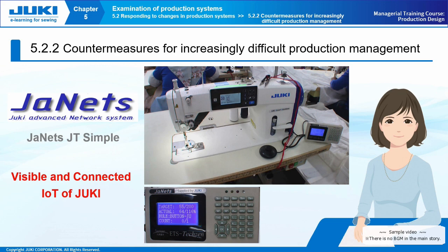5-2-2 Countermeasures for Increasingly Difficult Production Management. One of the characteristics of vast variation in small order quantity production is that it is difficult to manage production, because frequent changes in specifications and style cause production to be terminated while data is still being collected. Juki has released an equipment operation management system, JANETS JTSimple, which was developed based on the know-how of the managerial training course to deal with this problem. JANETS is a system that collects current data, identifies problems, and visualizes them by taking advantage of IoT to acquire data from sewing machines. Since managers can immediately take action to improve the system by looking at the data, they can manage production efficiently, even in factories with vast variation in small order quantity production.